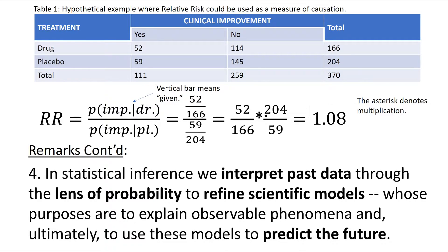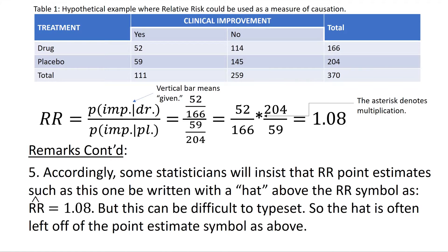In statistical inference, we interpret past data through the lens of probability to refine scientific models whose purposes are to explain observable phenomena and, ultimately, to use these models to predict the future. Accordingly, some statisticians will insist that relative risk point estimates, such as this one, be written with a hat above the relative risk symbol as relative risk hat equals 1.08. But this can be difficult to typeset, so the hat is often left off of the point estimate symbol. Some statisticians would insist that a hat be placed above this.